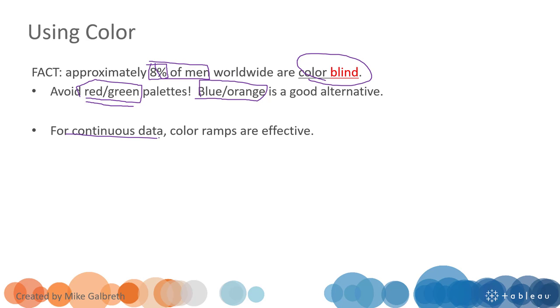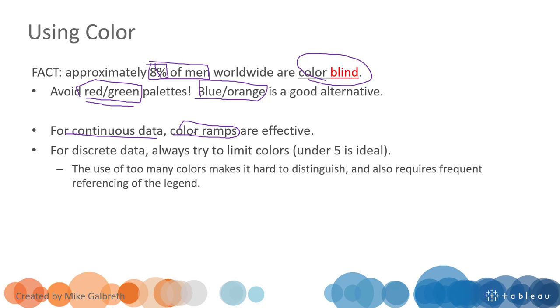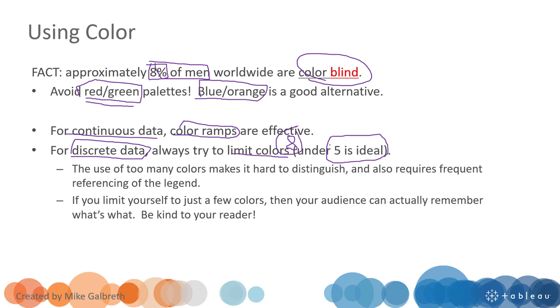For continuous colors we should use color ramps which are very effective, and we will see some examples later. For discrete color data you can use different types of colors. However, try to limit the colors - use no more than eight colors. In most textbooks of color visualizations it is highly recommended to use five, so that is ideal. Do not use more than five different types of colors, otherwise you will get confused and it's not an effective data visualization.